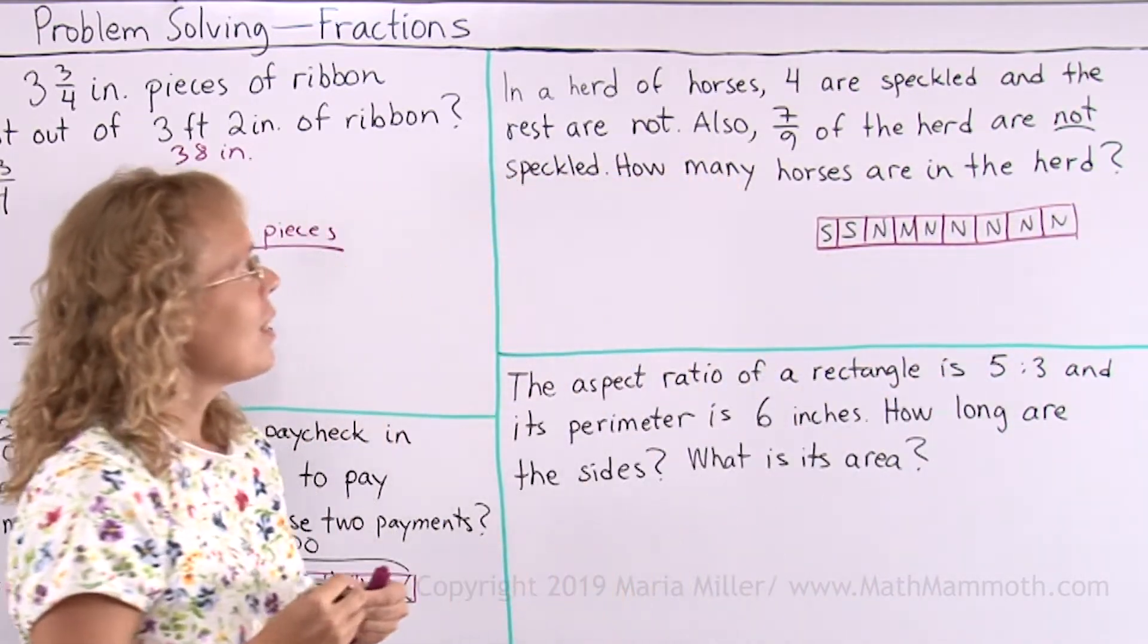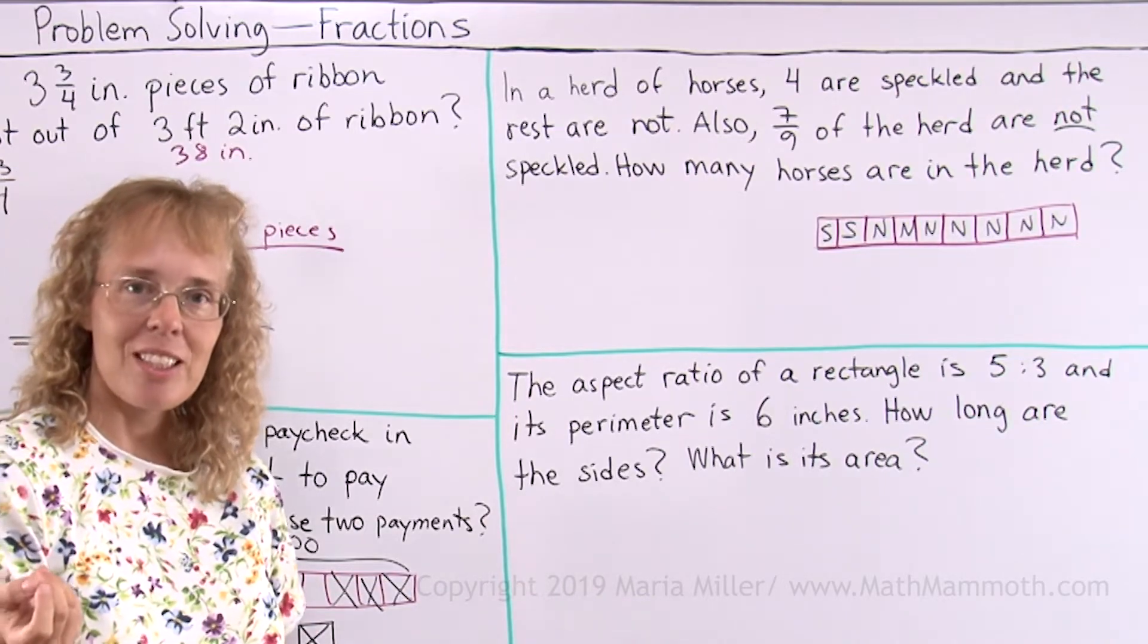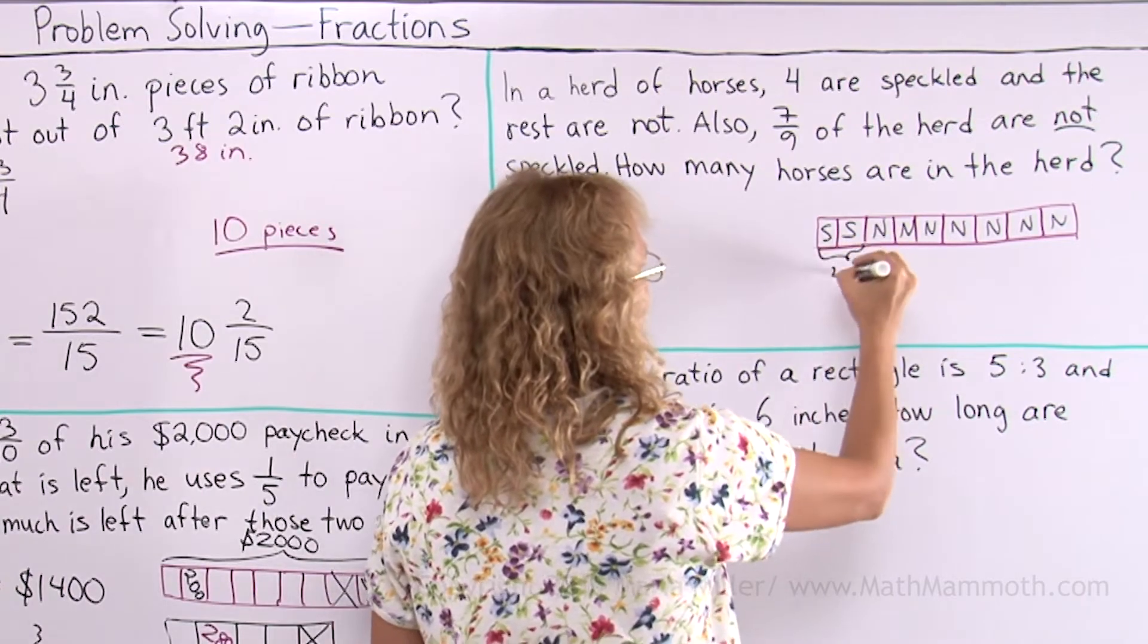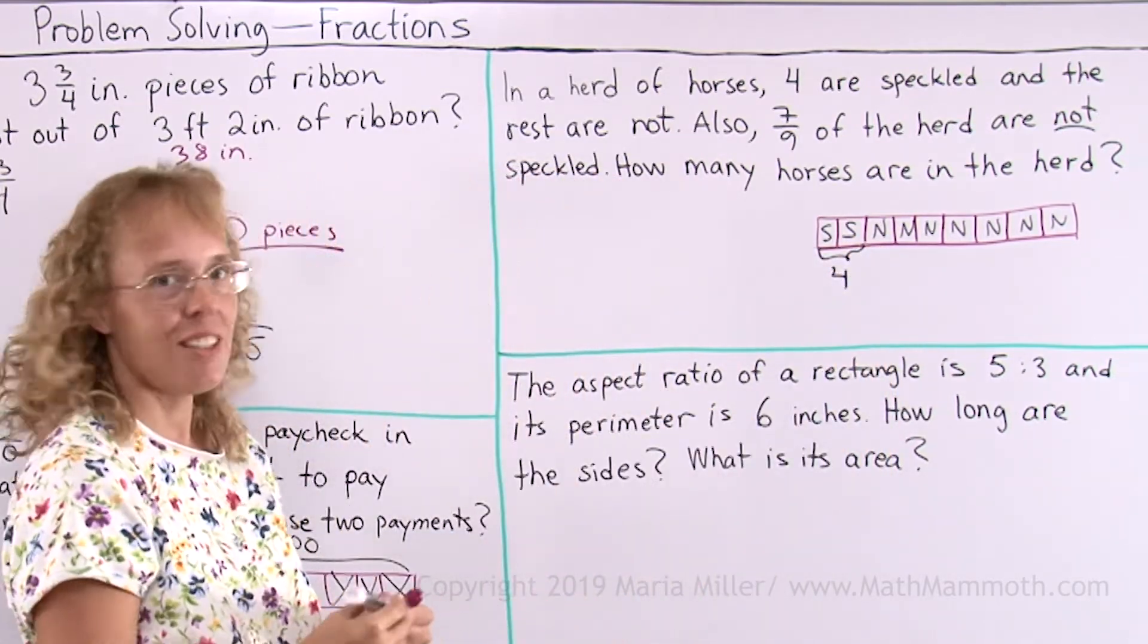And it says 4 horses are speckled, so let's mark that in our diagram. 4 horses are speckled. Those two blocks there are the 4 horses.